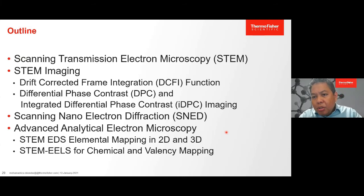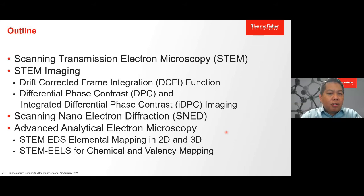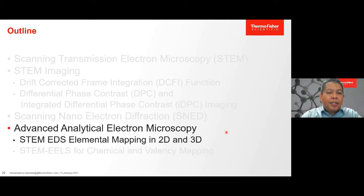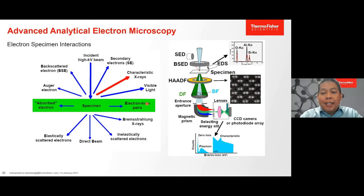Now we come to another part of our talk — advanced analytical electron microscopy. I will talk about EDX analysis in 2D and also 3D. Although one can also do analytical electron microscopy on conventional TEM, STEM definitely has more advantages. As a result of electron-sample interactions, many signals can be produced and collected by specific detectors to form images or perform chemical analysis. For chemical analysis, we have at least two important signals: characteristic X-rays used for EDX, and inelastically scattered electrons used for electron energy loss spectroscopy.